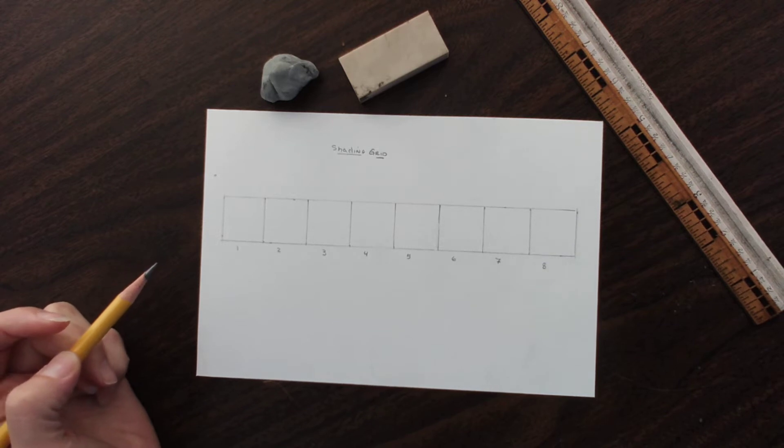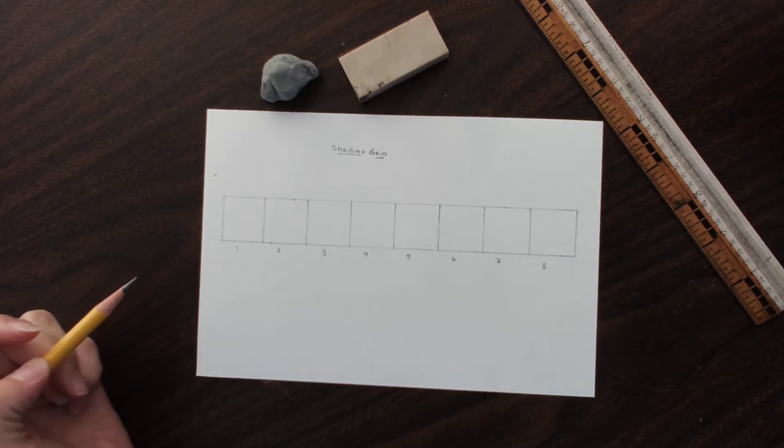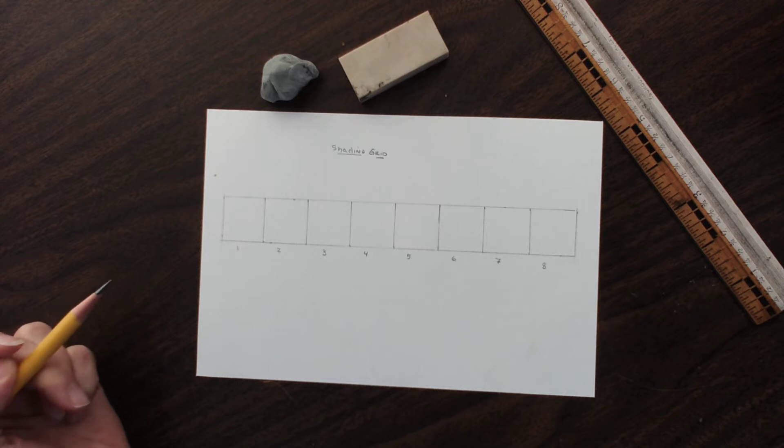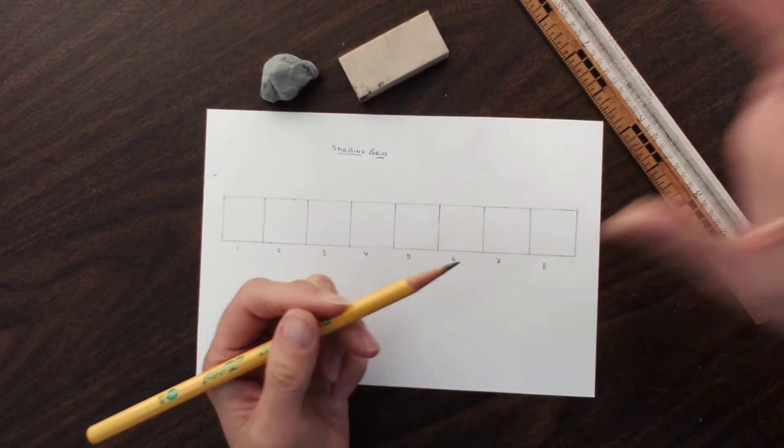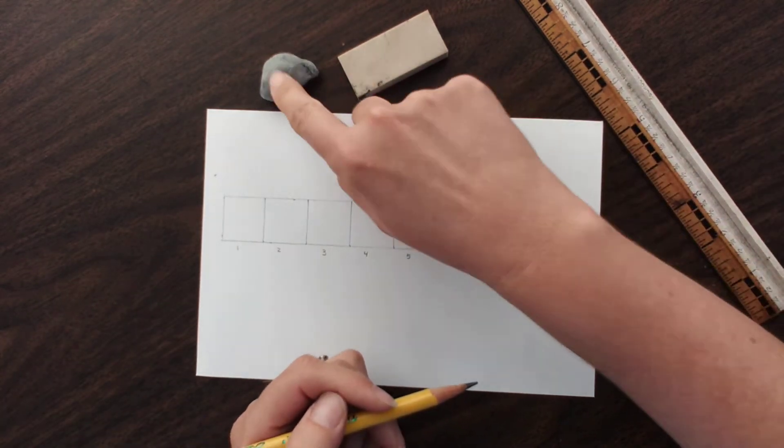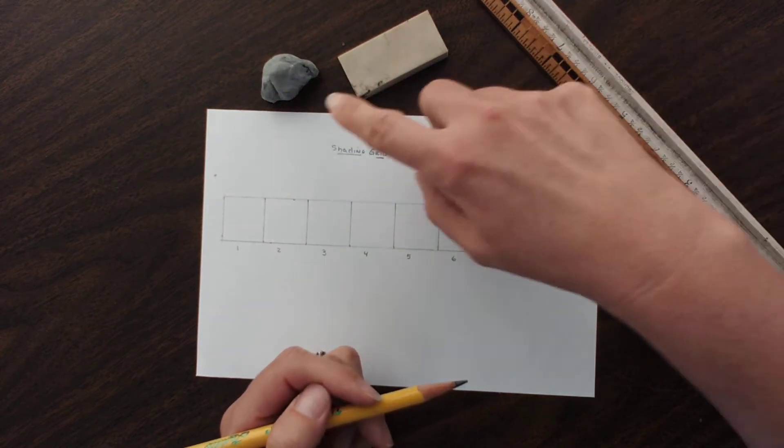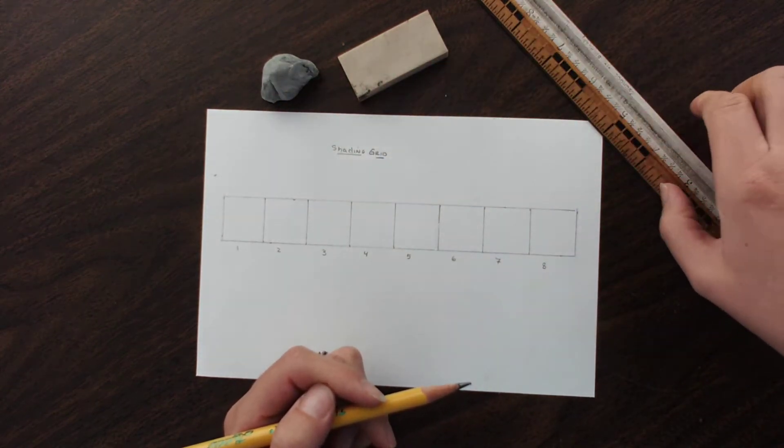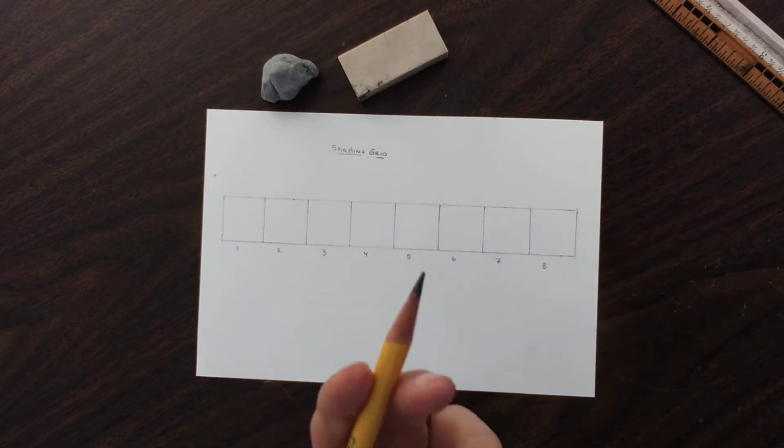Now that you've made your grid for your shading grid, we're going to talk about how to shade today. You should have a very sharp pencil, your erasers - your pink eraser and your gray eraser - and maybe your ruler a little later, probably not though.